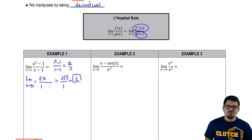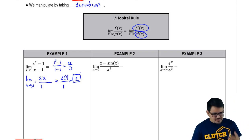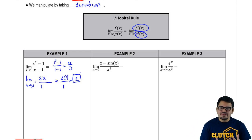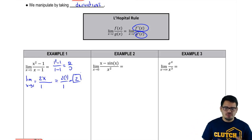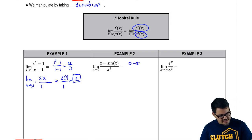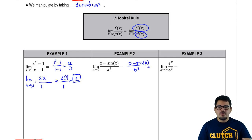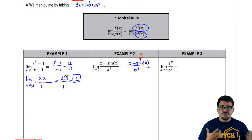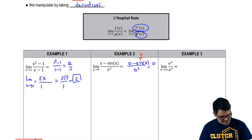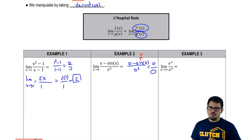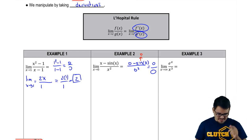Now I'm ready to move on to Example 2. That was fairly quick. Once again, we're just going to input the value directly. So I'm going to have 0 minus sine of 0 over 0 squared. Sine of 0 is 0, so I get 0 minus 0 on top, and 0 squared is 0 on the bottom — so I run into 0 over 0 again. But this example has a little twist.